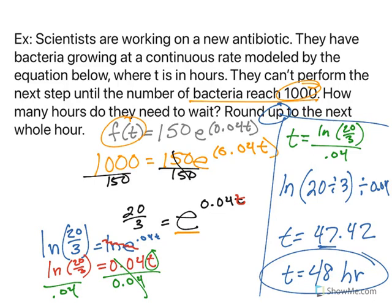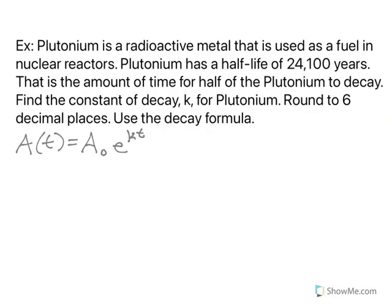Let's do one more. Plutonium is a radioactive metal that is used as a fuel in nuclear reactors. Plutonium has a half-life of 24,100 years. That half-life means is the amount of time for half of the plutonium to decay. So we want to find the constant rate of decay, which is the k in this formula for plutonium. Round to six decimal places and use the decay formula.